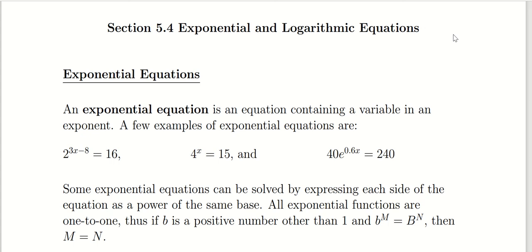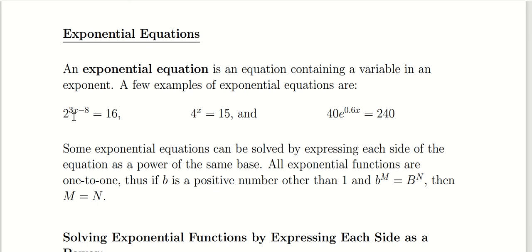In section 5.4, we're going to look at exponential and logarithmic equations. An exponential equation is an equation that contains a variable in an exponent. A few simple examples would be 2 raised to the 3x minus 8 equals 16 — the reason it's exponential is because the exponent contains the variable x. Other examples include 4 to the x equals 15, or something more involved like 40 times e to the 0.6x equals 240.